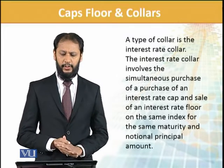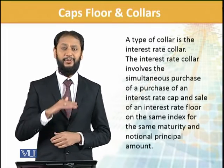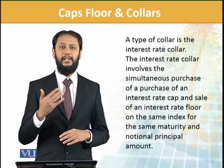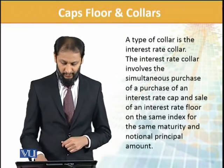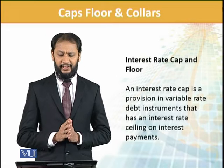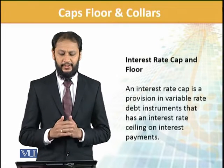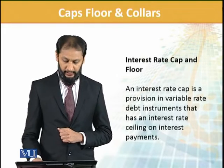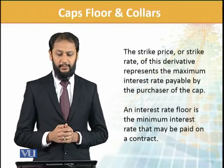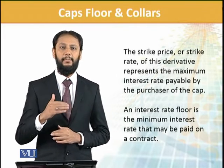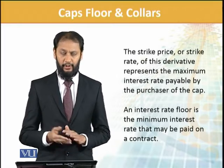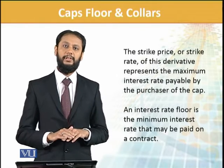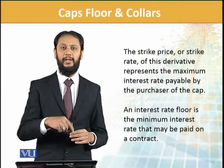We write a floor - उसमें क्या होगा कि we are limiting ourselves to 6. अगर rate 5 पर चला जाएगा तो हम bank को 5 देंगे और जिसको हमने option लिखी है उसको 1% देंगे। यह premium लेके आप वो अपनी cap का premium pay कर दें - तो यह zero cost collar बन जाए। Range क्या बन गई आपकी: 6 to 8. Interest rate collar involves simultaneous purchase of an interest rate cap - upper end - and sale of an interest rate floor on the same index and same instrument.